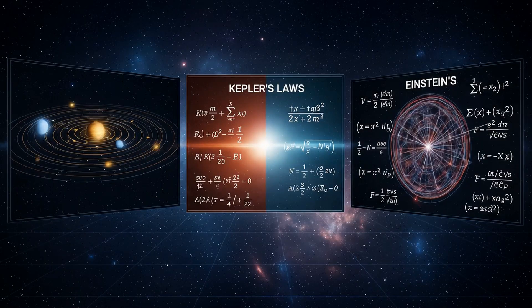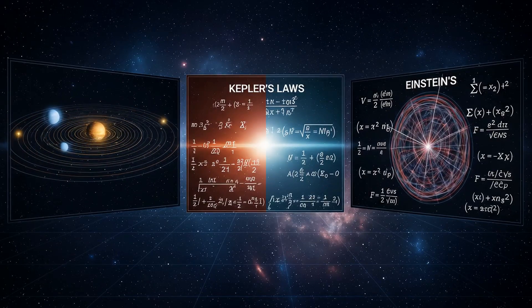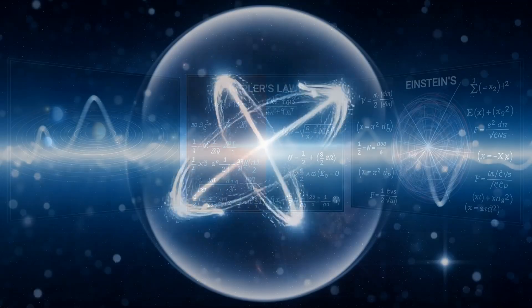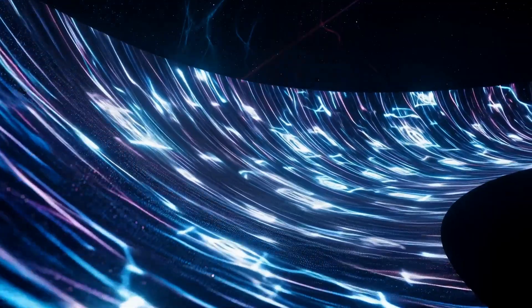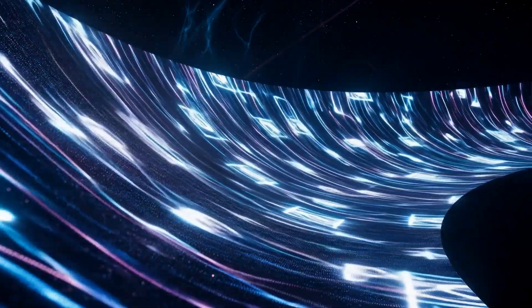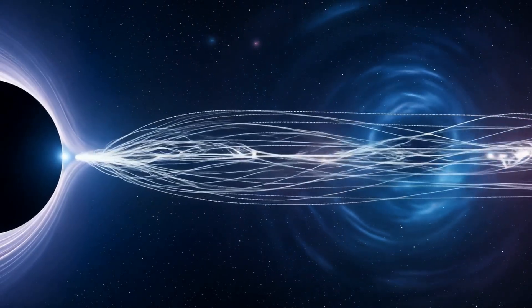Every orbit follows this geometry. Kepler's laws describe it. Einstein's tensors model its curvature. But behind them all is a hidden structure, the quantum state vector tensor field. Black holes encode memory. The singularity is a field of entangled spins. The event horizon is its mirror.